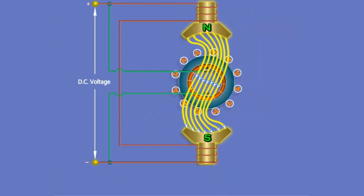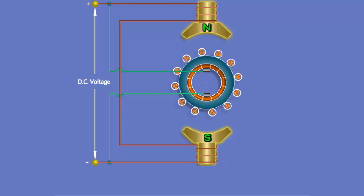Now, the crowded flux lines act like a stretched rubber band. The flux lines tend to pull the armature conductors in the anti-clockwise direction.